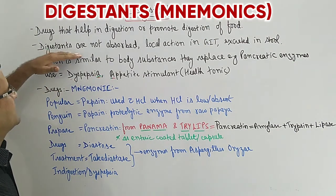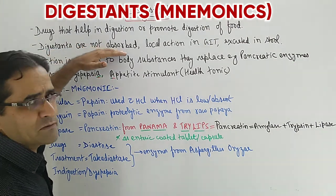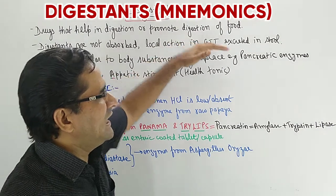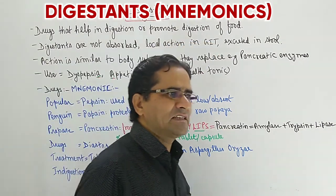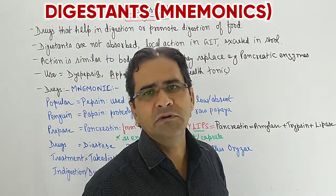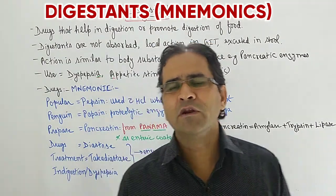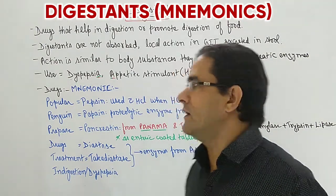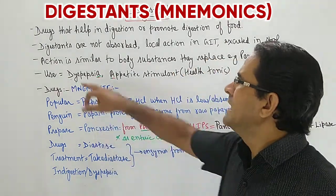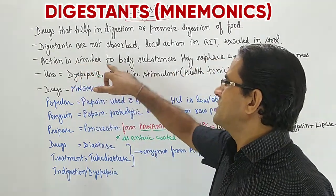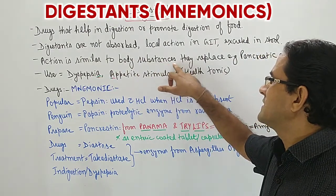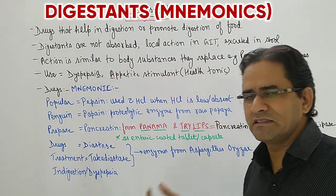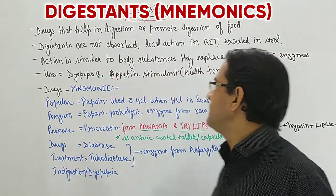These digestants are not absorbed. They have local action in the GI tract and they are excreted in stool. It means there will be no entry of these substances into the blood. Their action is similar to the body substances they replace.